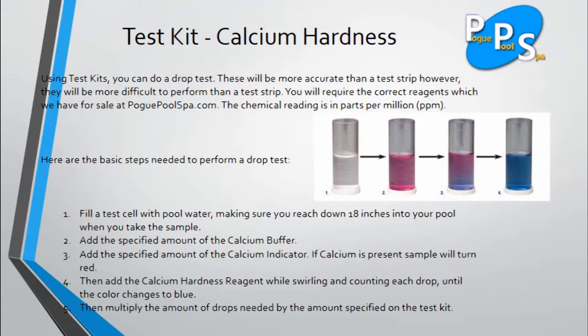The chemical reading is in parts per million. Here are the basic steps needed to perform a drop test. Step 1: Fill a test cell with pool water, making sure you reach down 18 inches into your pool when you take the sample.